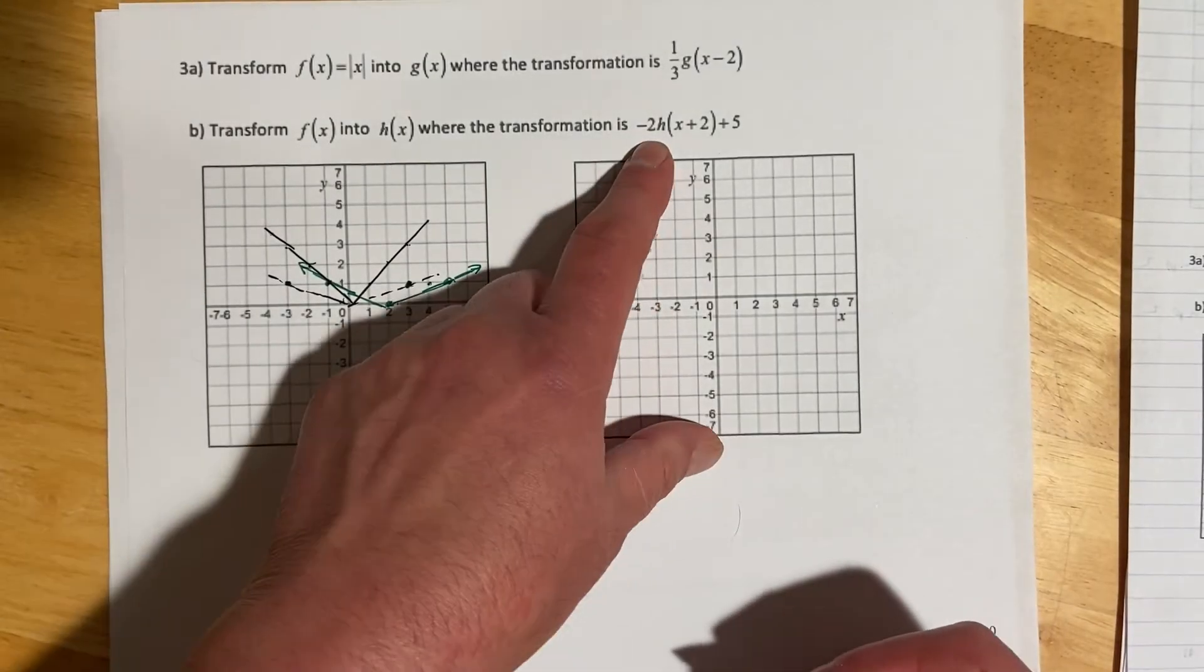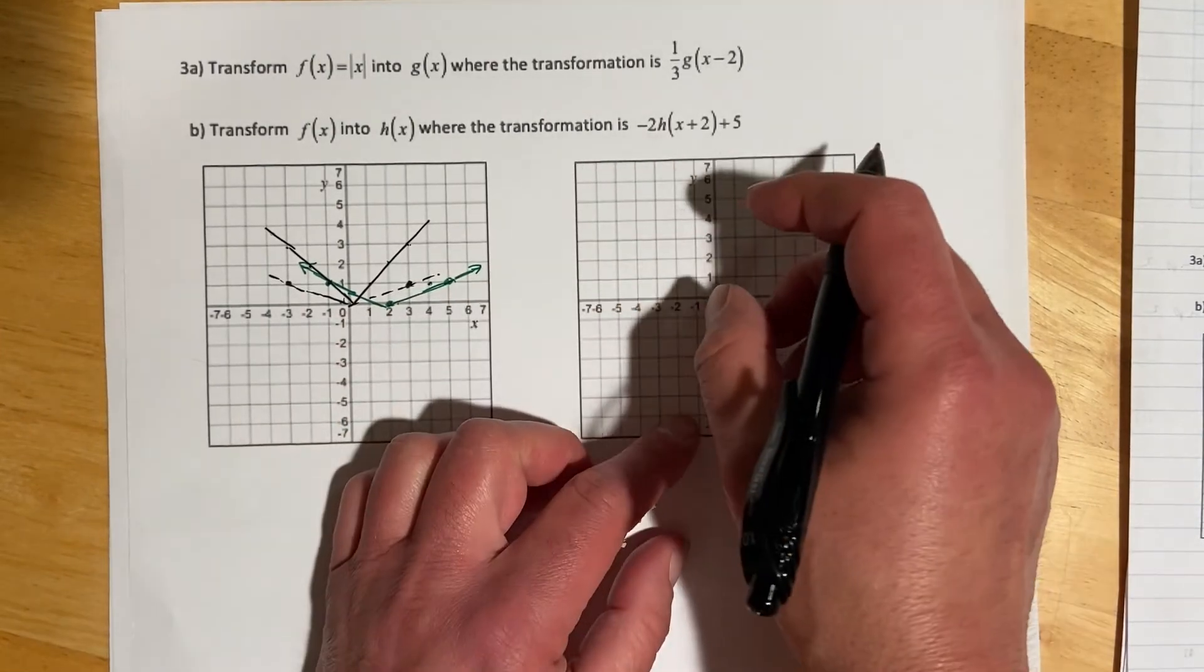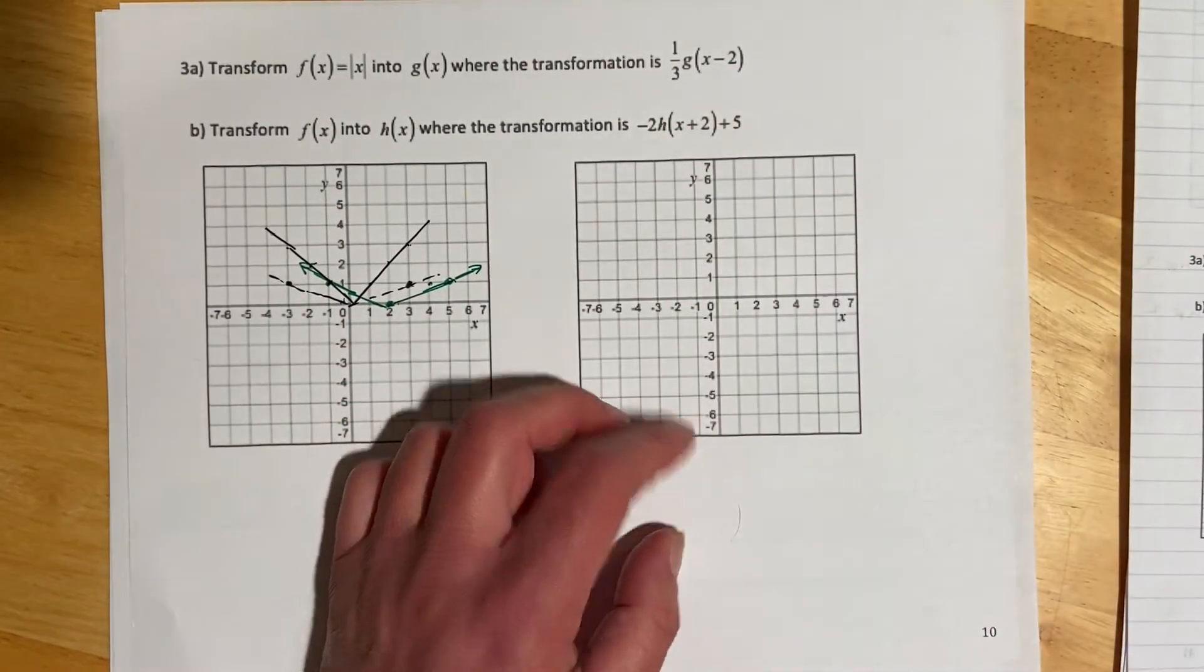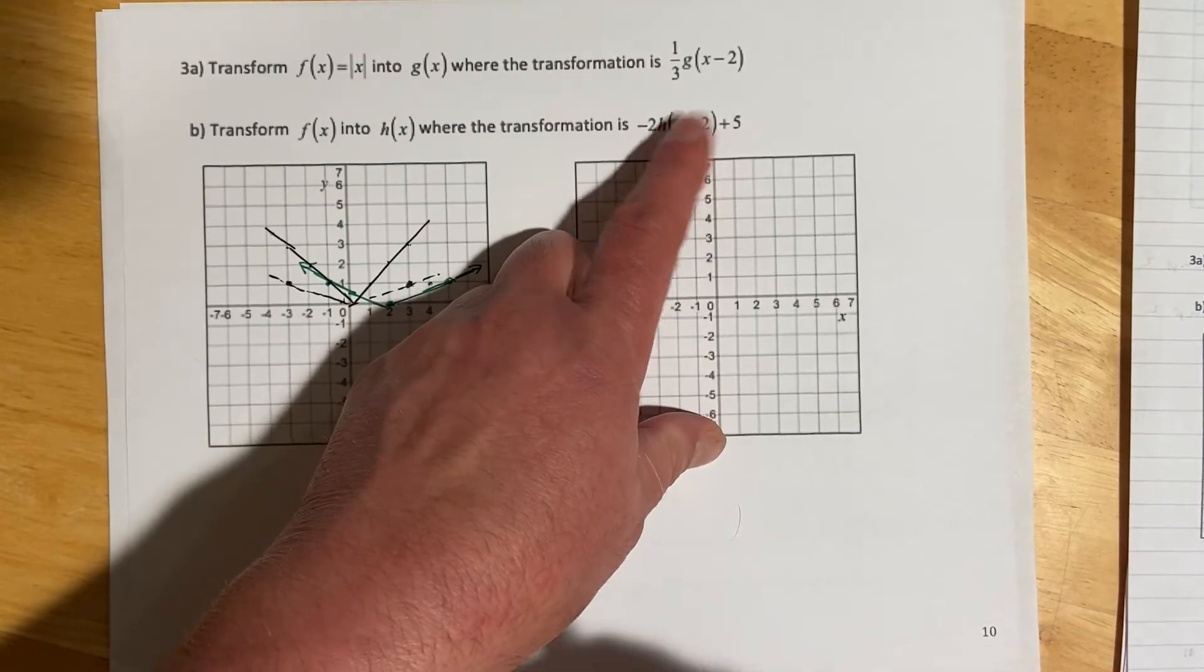This one has a minus 2 in front, so that's going to stretch it by 2 and then reflect, and then that's left 2 and up 5.